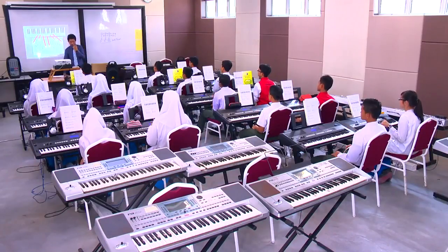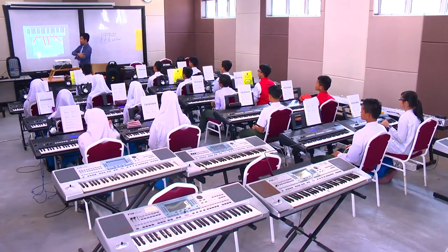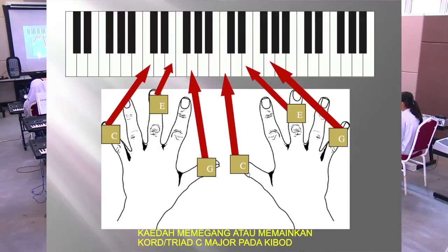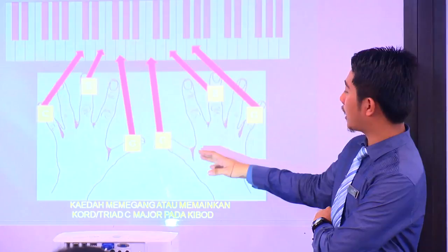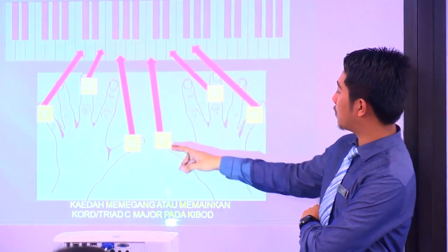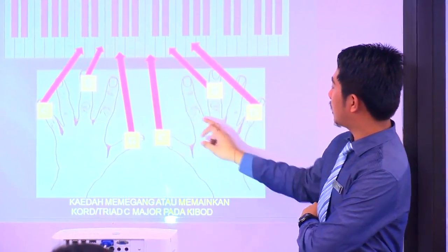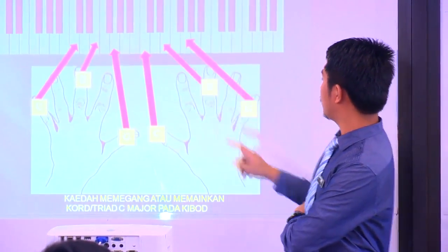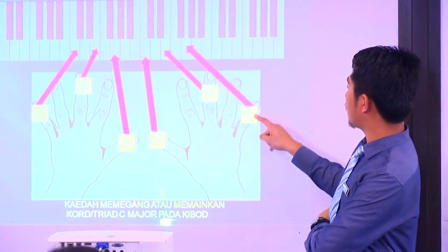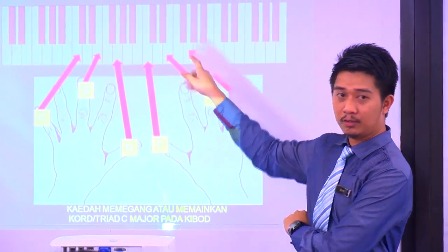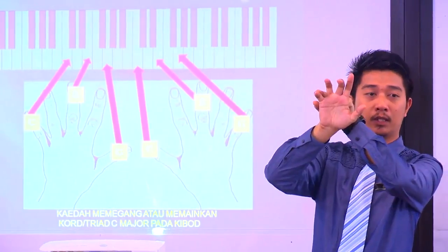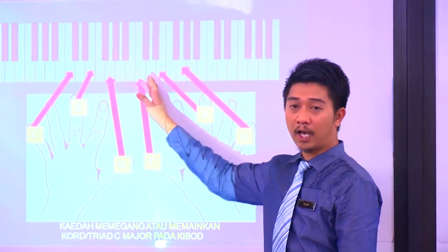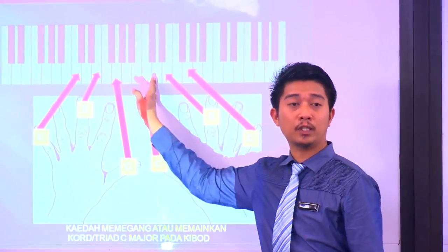Baiklah, kita akan pergi asas yang pertama. Kita tengok dekat depan. Jari kanan, tangan kanan - jari pertama dekat C, jari ketiga dekat E, jari kelima dekat G. Satu, tiga dan lima, dekat C pertengahan ataupun middle C.